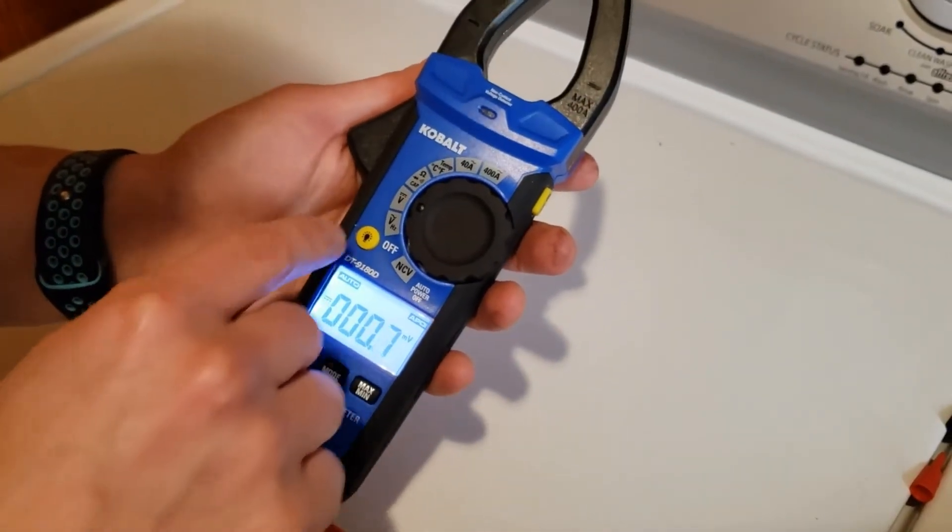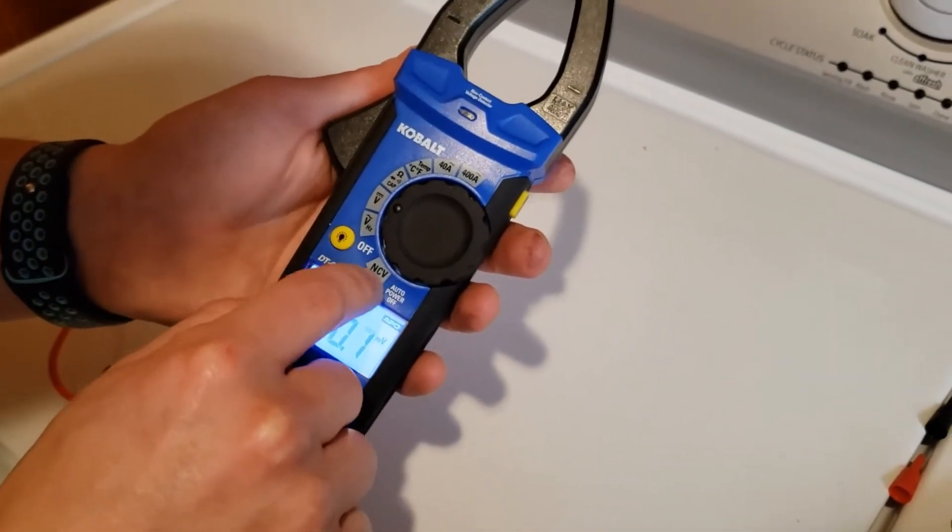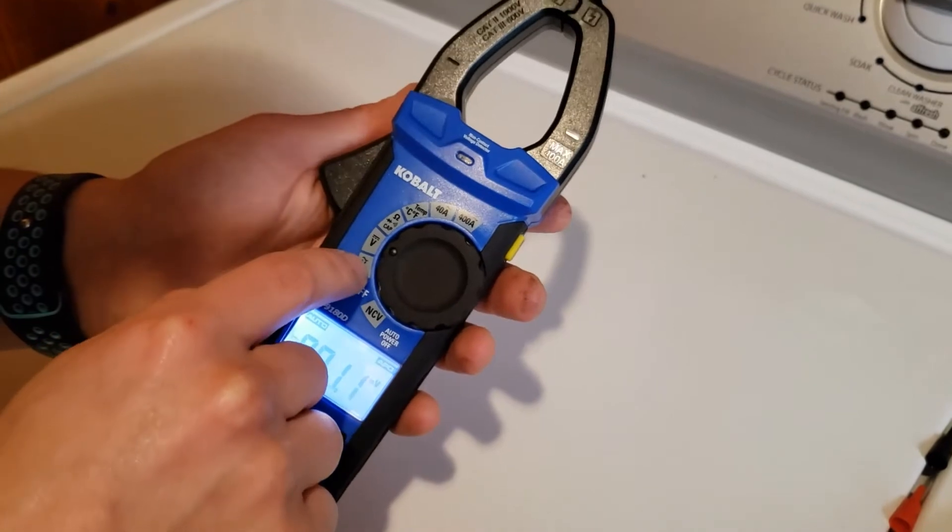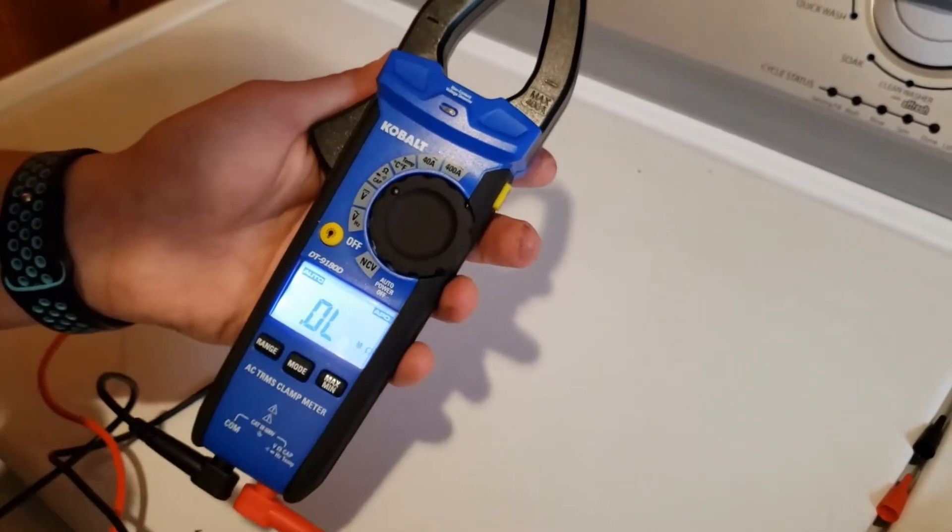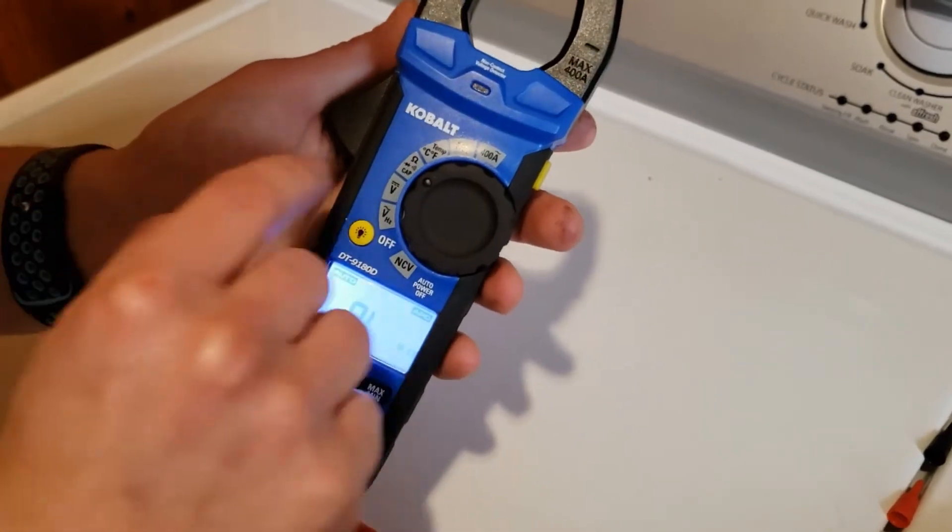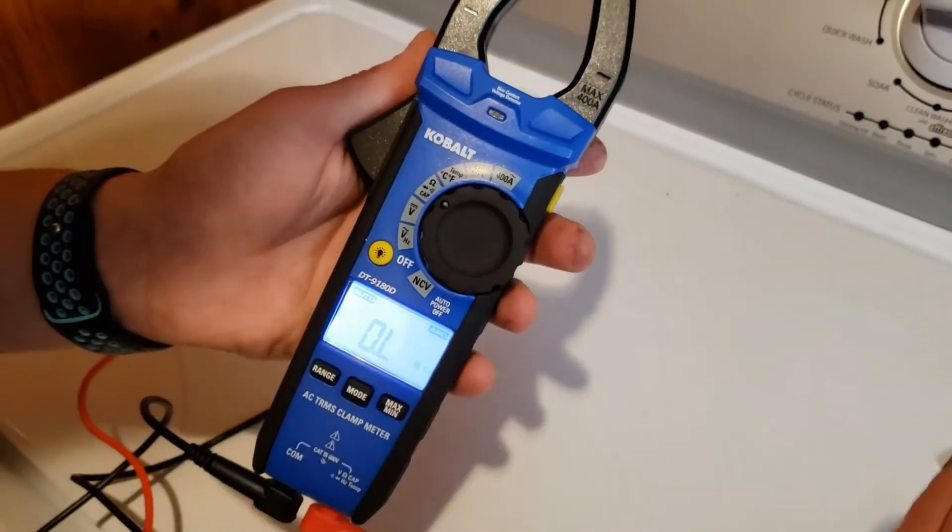The next thing you can do on your multimeter, we've got volts, the non-contact voltage detector, alternating and direct current volts. And then you can check your ohms, which is your resistance, which looks like an omega. Then your diode, which is a little line with an arrow.